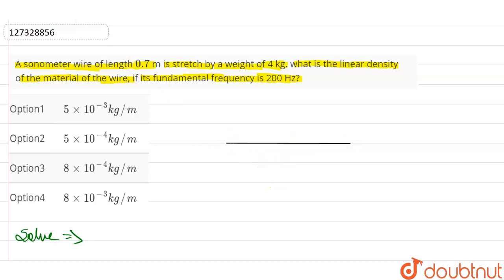This is a sonometer wire which is stretched. What is the weight? The weight of the object. It stretched by the weight and the weight of the object.